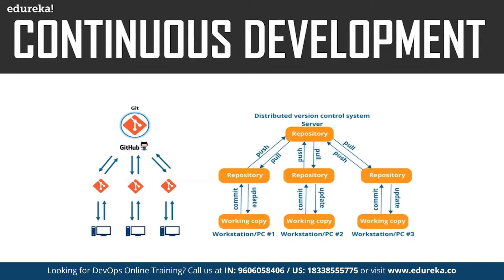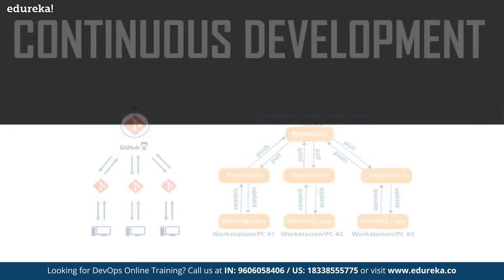Why do we use Git? Imagine for any reason the main server or repository crashes or is unavailable. In such a scenario, the local repository still has the code for your application. This is an advantage of using tools such as Git. That was all about continuous development.